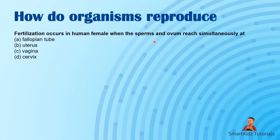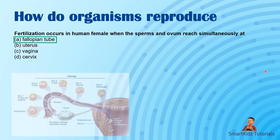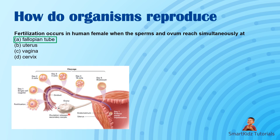Fertilization occurs in the human female when the sperm and ovum meet in the fallopian tube. Looking at the diagram: this is the ovary, this is the fallopian tube — the egg is released and absorbed by the fallopian tube, and fertilization takes place there, not in the uterus, vagina, or cervix.